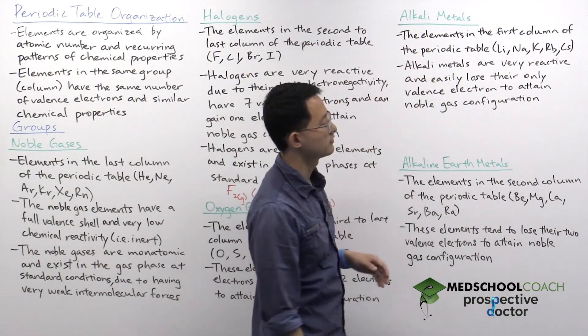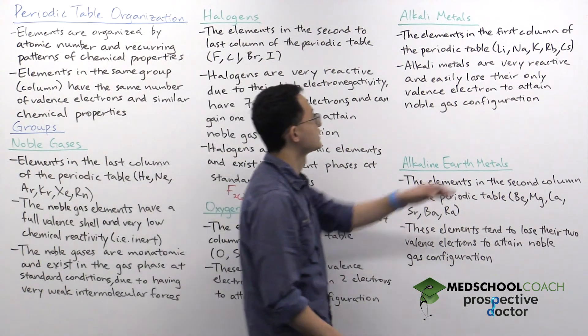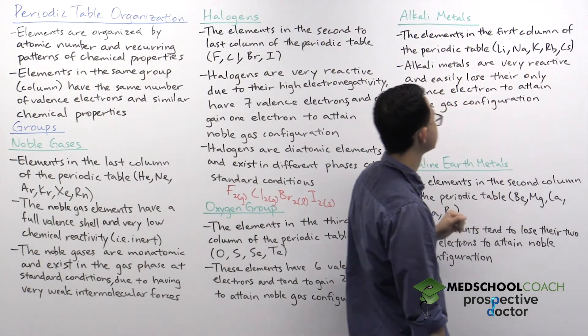All right. Our next group are the alkaline metals. These are the elements in the first column of the periodic table. This includes lithium, sodium, potassium, rubidium, and cesium.